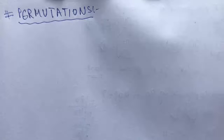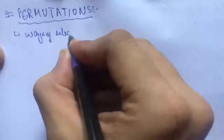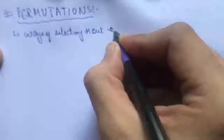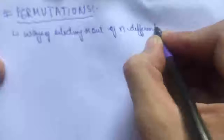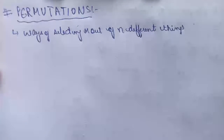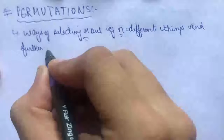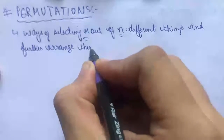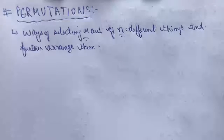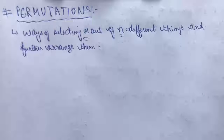What are permutations? Permutations are actually ways of selecting few things out of a bundle of things available and further arranging them in a certain order. Permutations are ways of selecting r out of n different things — there are total n different things available and we have to select r things out of them and further arrange them. This is what is called permutation.